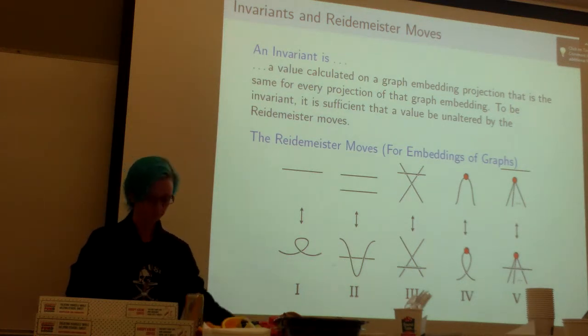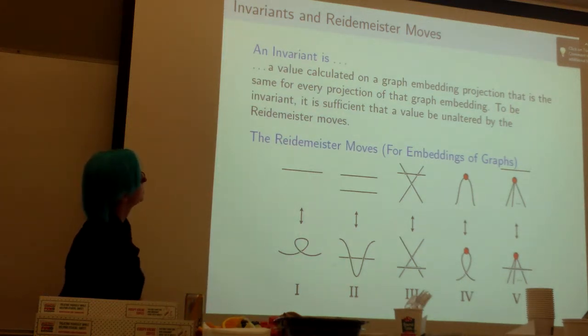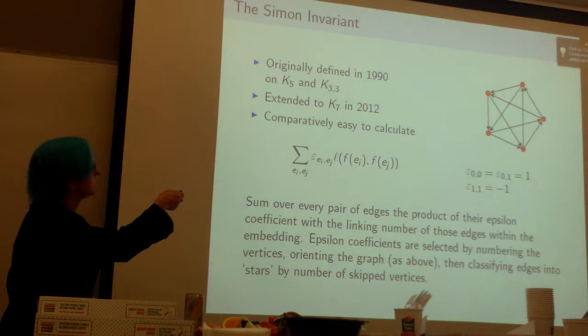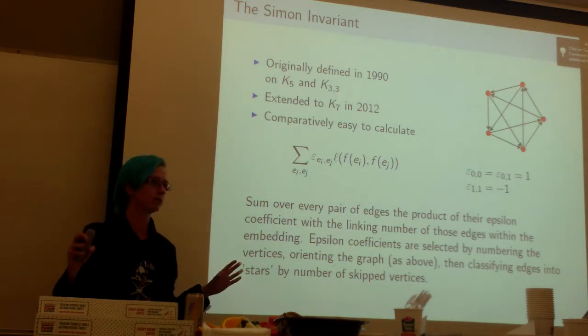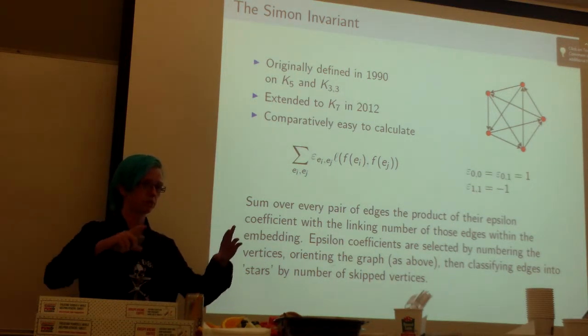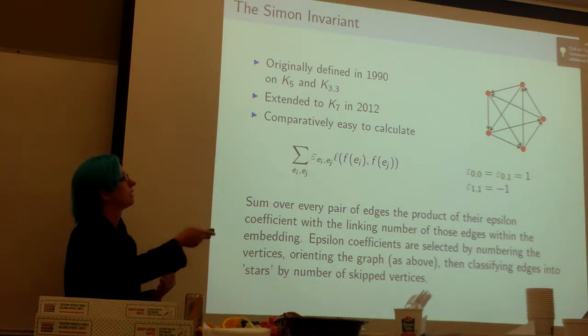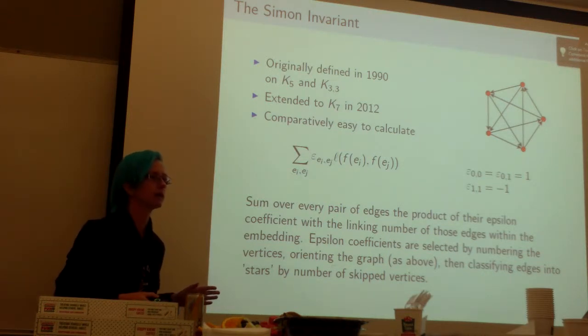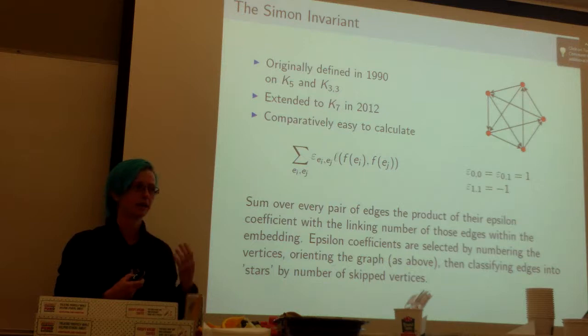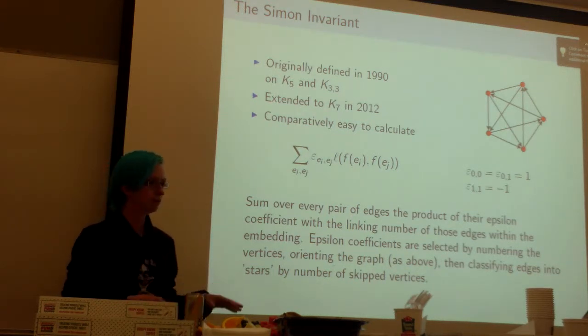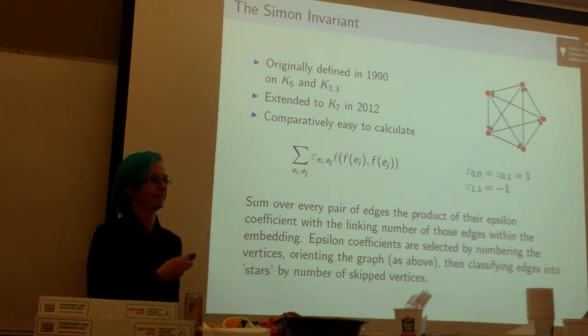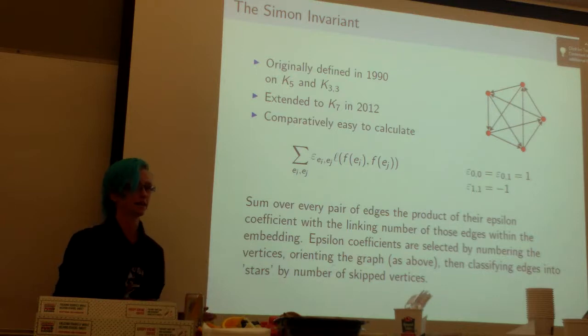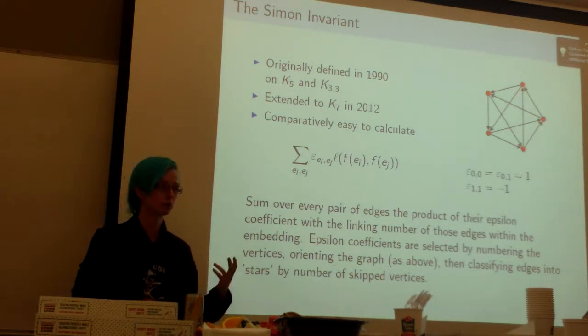The Simon invariant was originally defined only on a couple of graphs. It's very recent, from 1990. It was defined on the complete graph for five vertices, which is basically just a pentagram with a star in it, and defined on K3,3. Then a student at Pomona College, Will Fletcher, in 2012, extended it to seven vertices. This was a lot of big progress because extending these invariants can get really complicated. It was a surprise that this could be extended to K7.